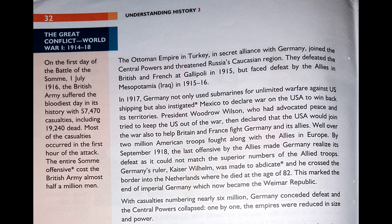By September 1918, the last offensive — offensive meaning causing someone to feel upset and angry, or an attack — by the Allies made Germany realise its defeat as it could not match the superior numbers of the Allied troops. Germany's ruler Kaiser Wilhelm was made to abdicate — abdicate meaning to give up formally a high office, throne and authority — and he crossed the border into the Netherlands, where he died at the age of 82.